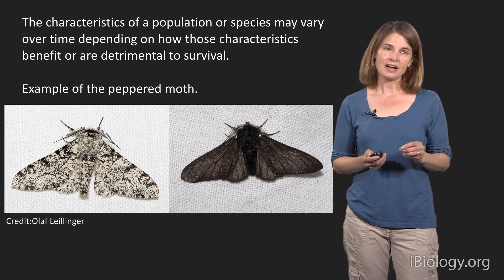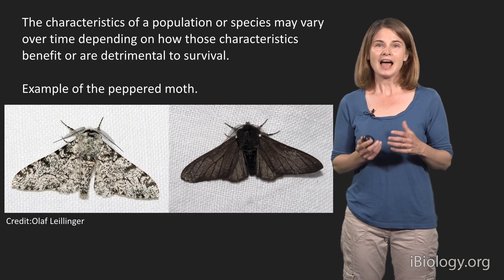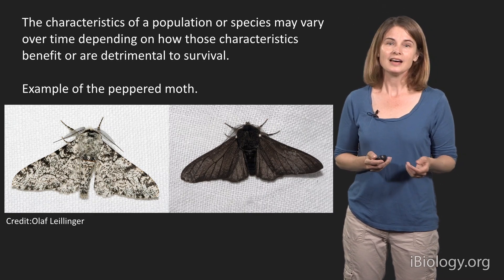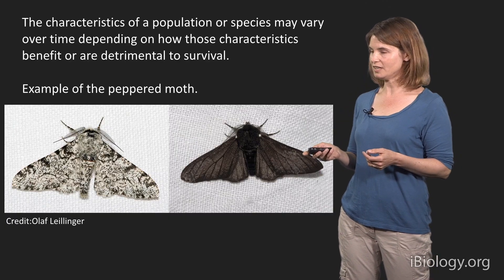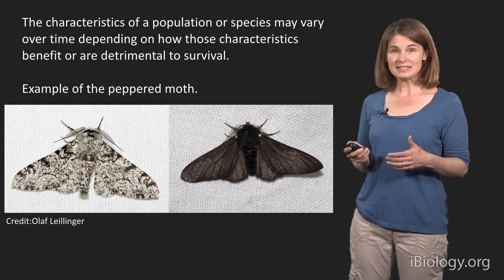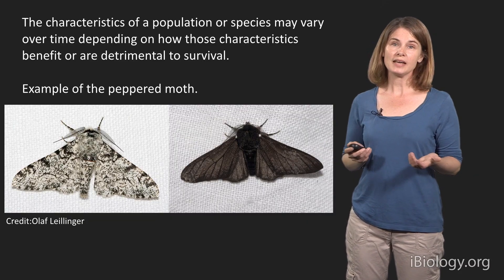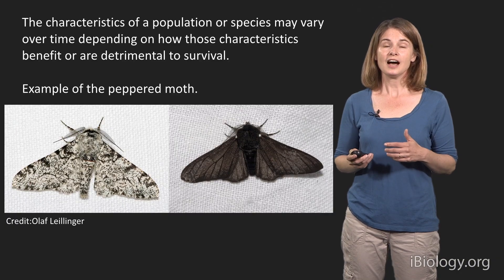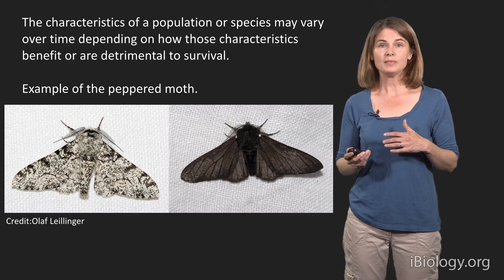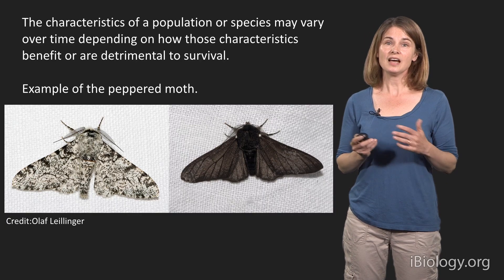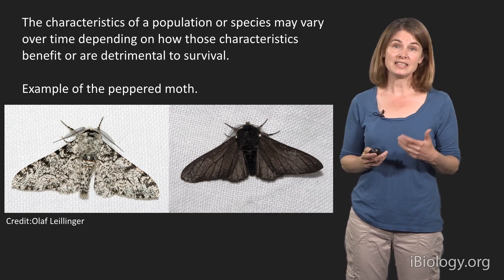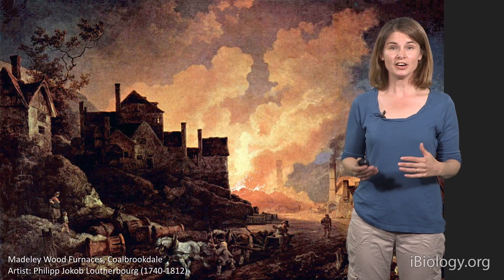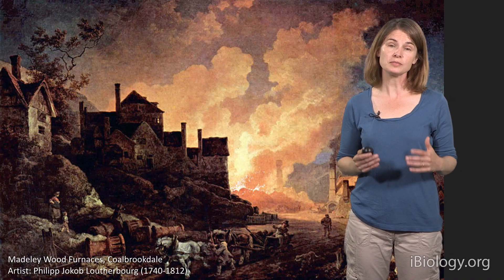One example of variation that's been really important for understanding how we can change the characteristics of a species over time is the peppered moth. These two moths — the light one on the left and the dark one on the right — look very different but are the same species and can interbreed. The dark and light moths do better in different types of environments. This color characteristic varies, and in some environments it benefits organisms to be light or dark, while in other environments that same characteristic may be detrimental. These peppered moths provide a classic example of how characteristics can vary with environment and how populations of a particular species can vary.